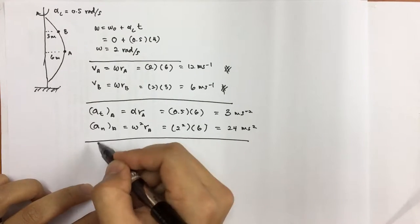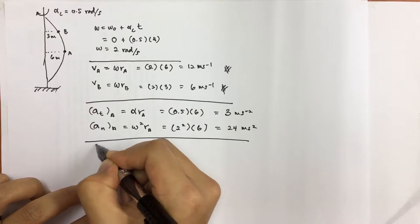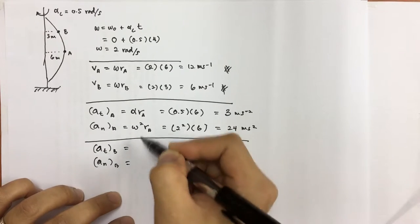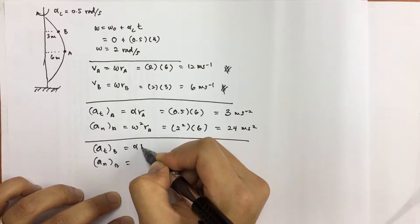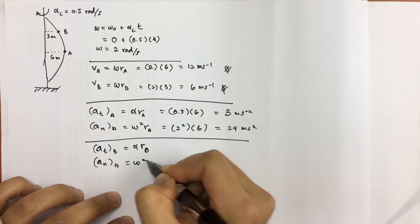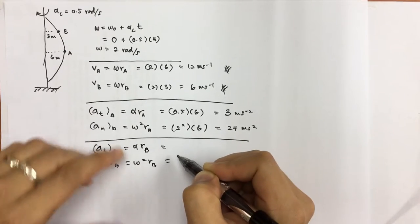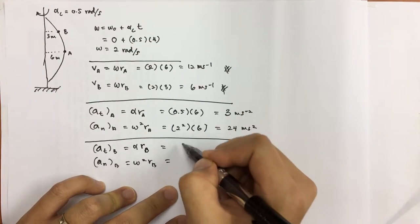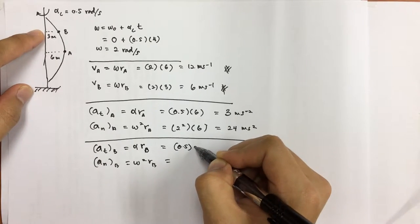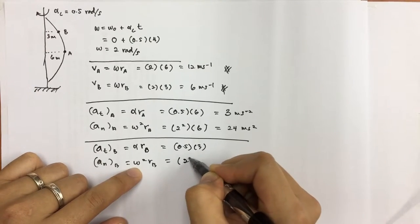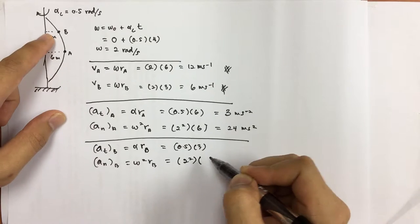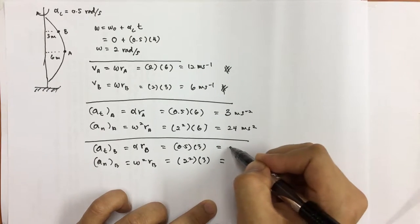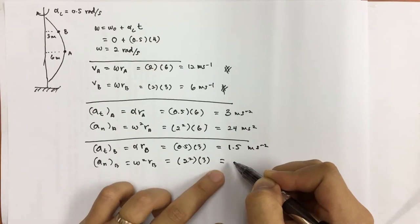Now we apply the same steps for component B. Tangential acceleration for B equals alpha times R_B, and normal acceleration for B equals omega squared times R_B. Alpha is the same since the whole body experiences the same angular acceleration. So tangential B equals 0.5 times 3 equals 1.5 meters per second squared, and normal B equals 2 squared times 3 equals 12 meters per second squared.